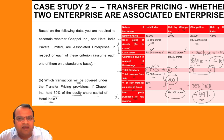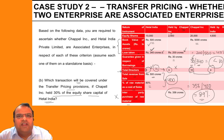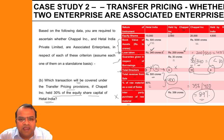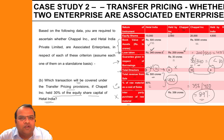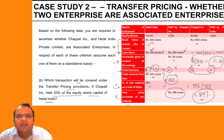If two parties are related parties by application of even one of the criteria, then all transactions between those parties — for example, interest on a loan, guarantee fees, or the price paid for raw material — will all be covered under transfer pricing regulations, and the arm's length price would need to be determined for each of them.